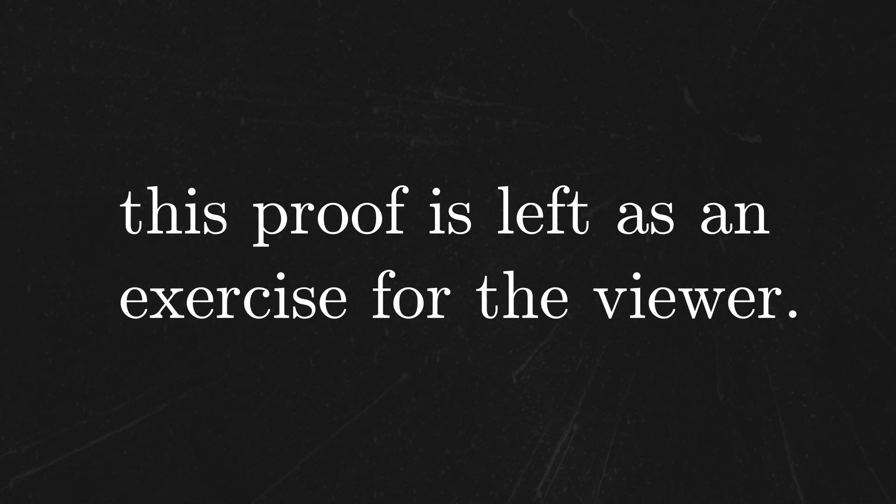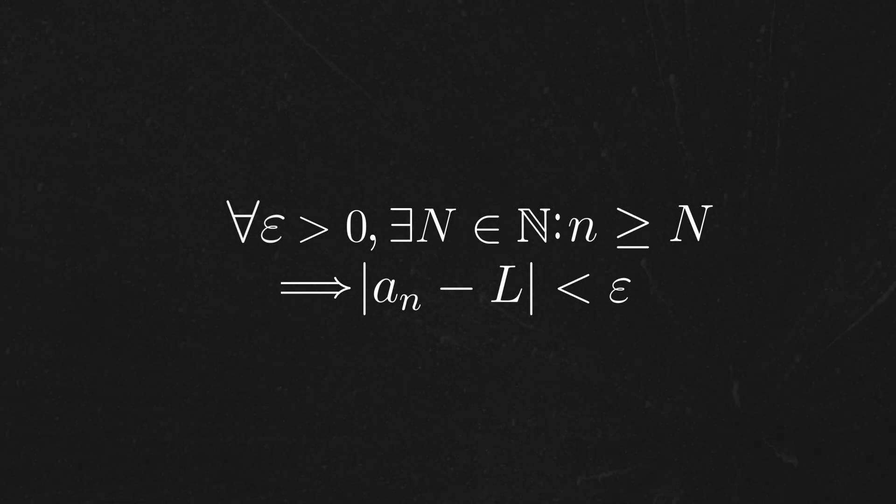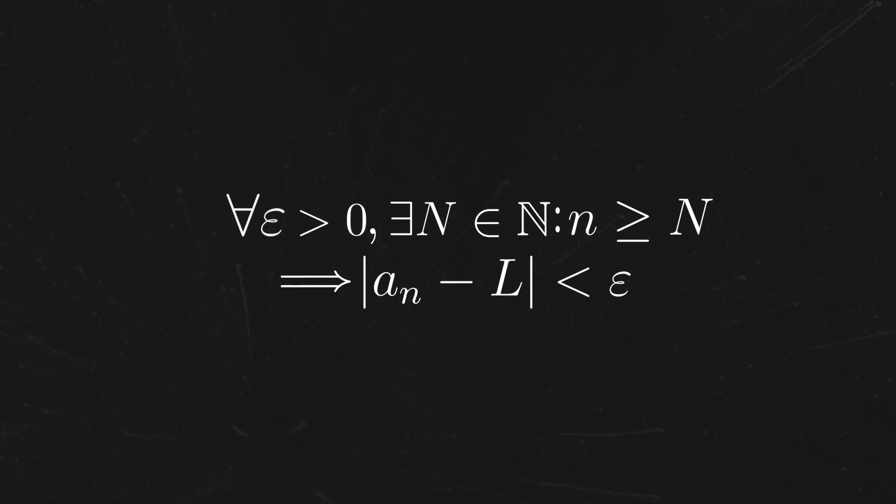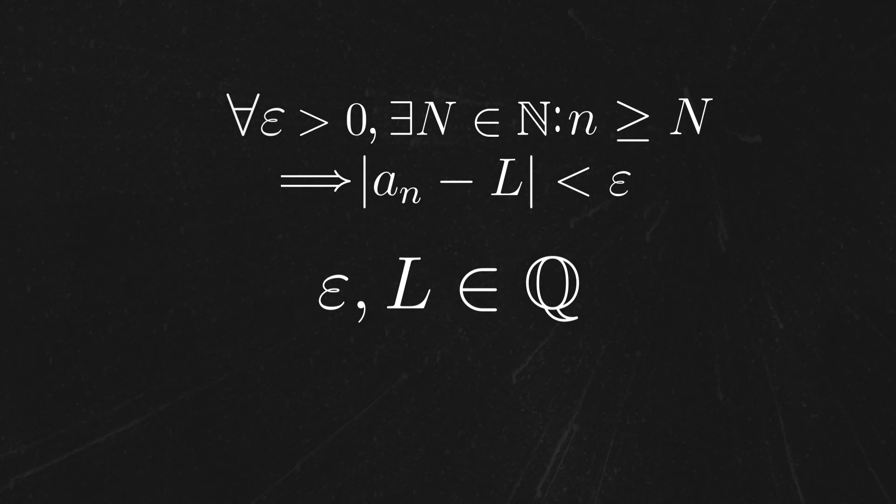I want to take a second to make an important side note here. The definition of convergent sequence that you might be used to still makes sense in the rational numbers if we impose the extra conditions that epsilon and L are rational. This will be important in a moment. However, this means that if we're simply restricting ourselves to rational world, some sequences might not converge anymore.